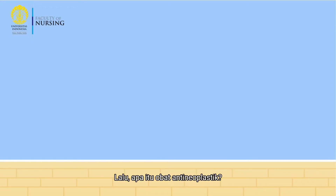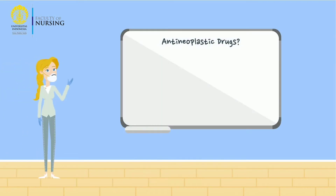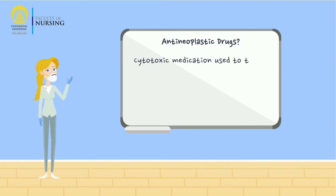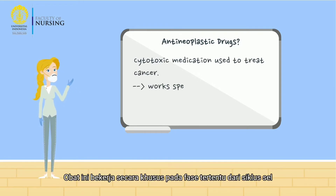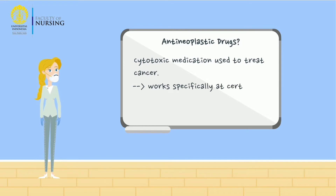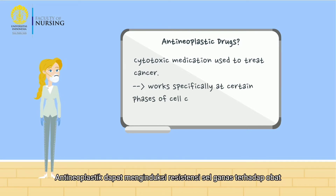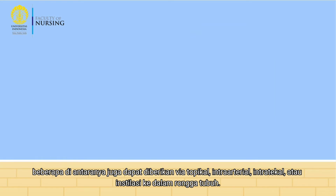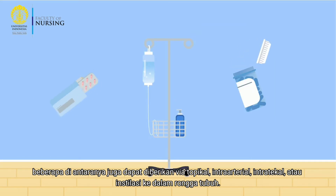What are antineoplastic drugs? Antineoplastic drugs are cytotoxic medications used to treat cancer. They work specifically at certain phases of the cell cycle. These antineoplastics can induce malignant cell resistance to drugs and are generally given orally or intravenously. Some may be administered topically, intra-arterially, intrathecally, or by instillation into body cavities.